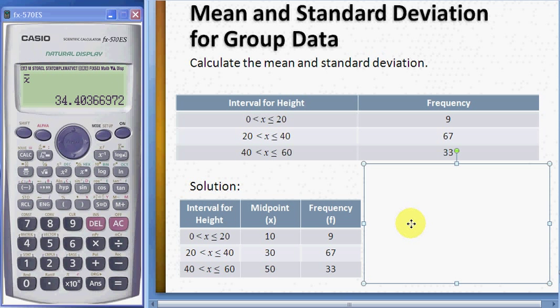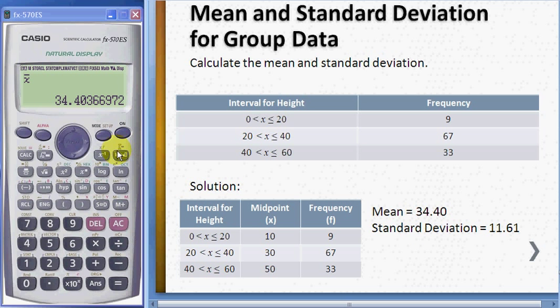Your mean is 34.40. And shift 1, 5, 3 to find the standard deviation, so your standard deviation is 11.61.